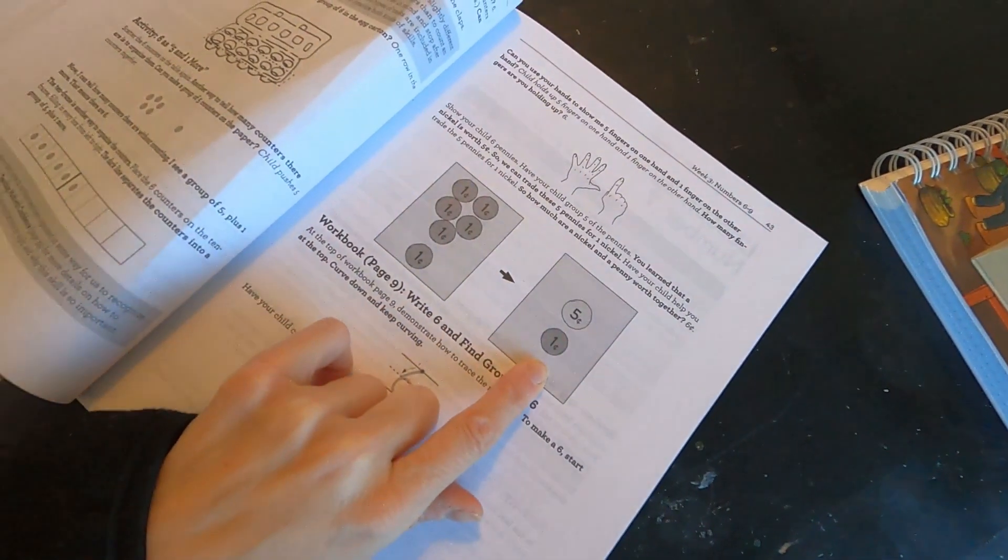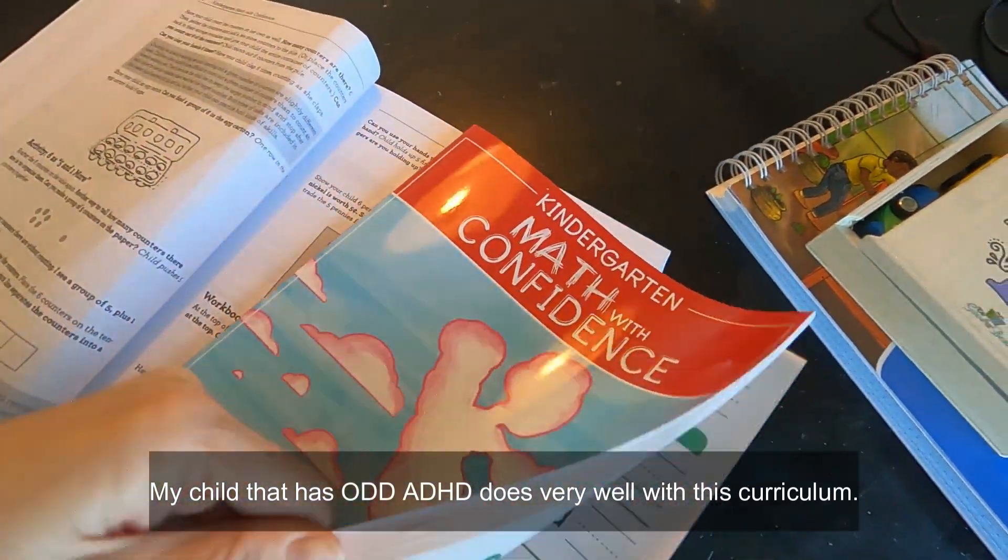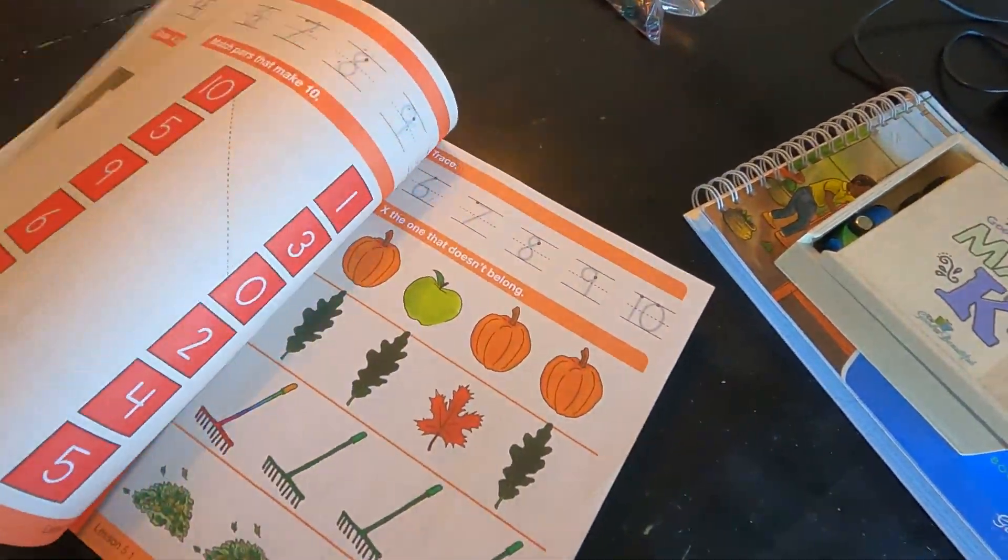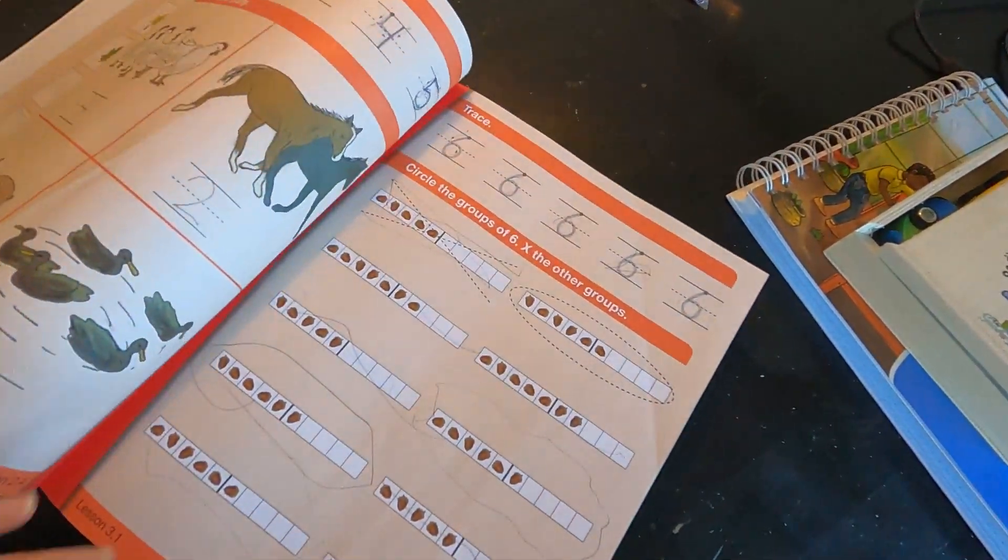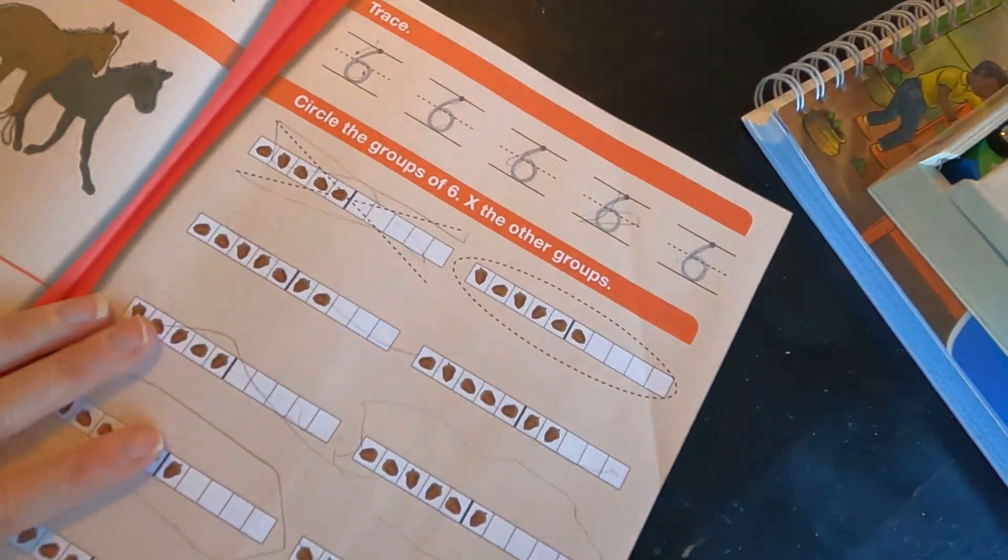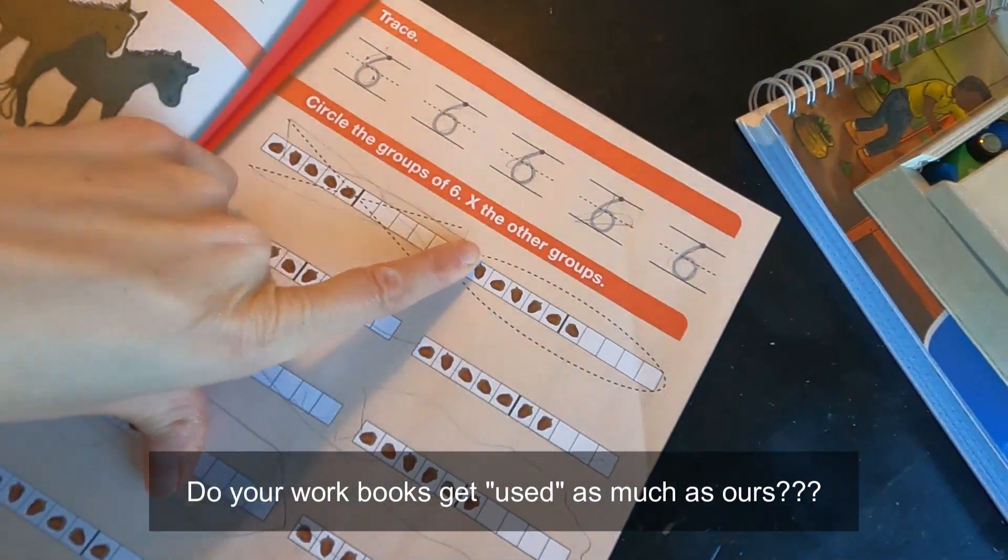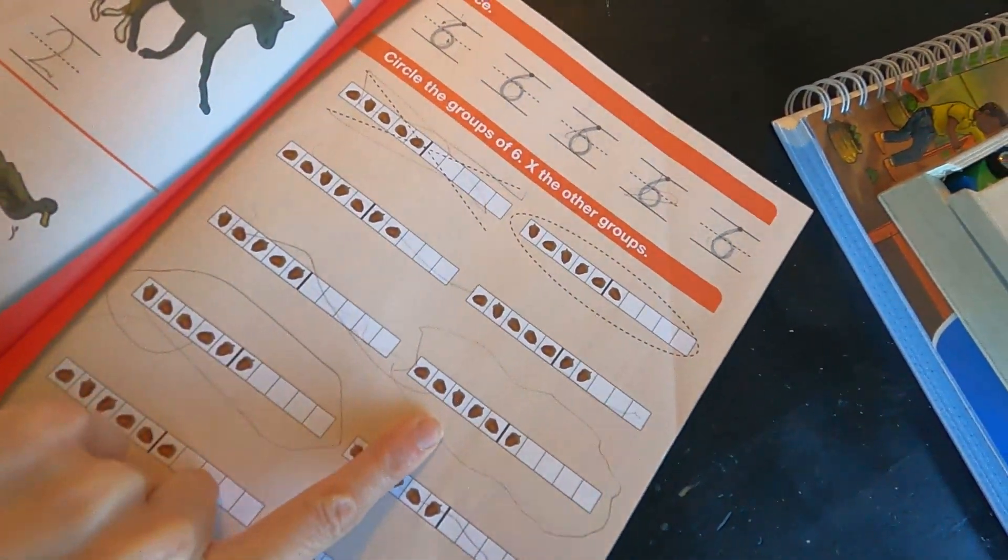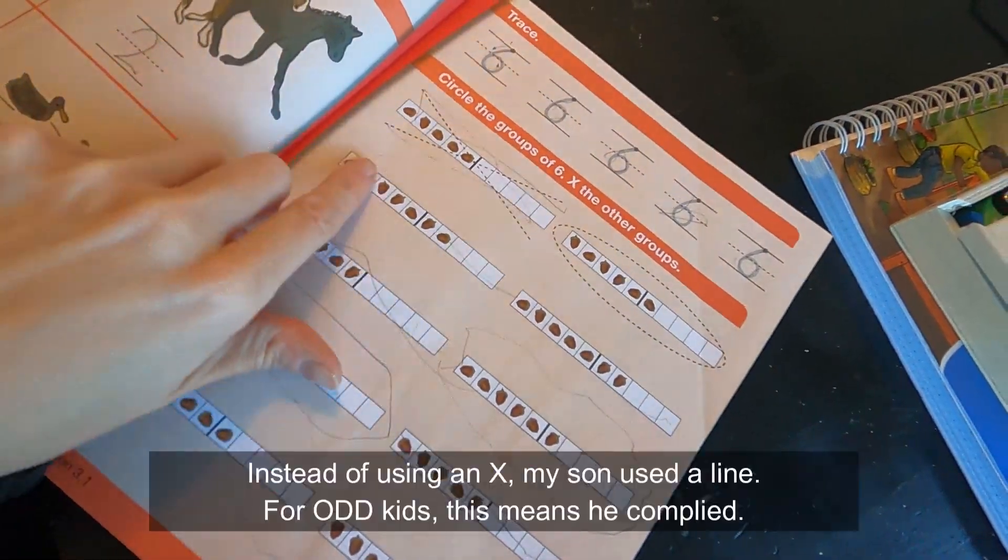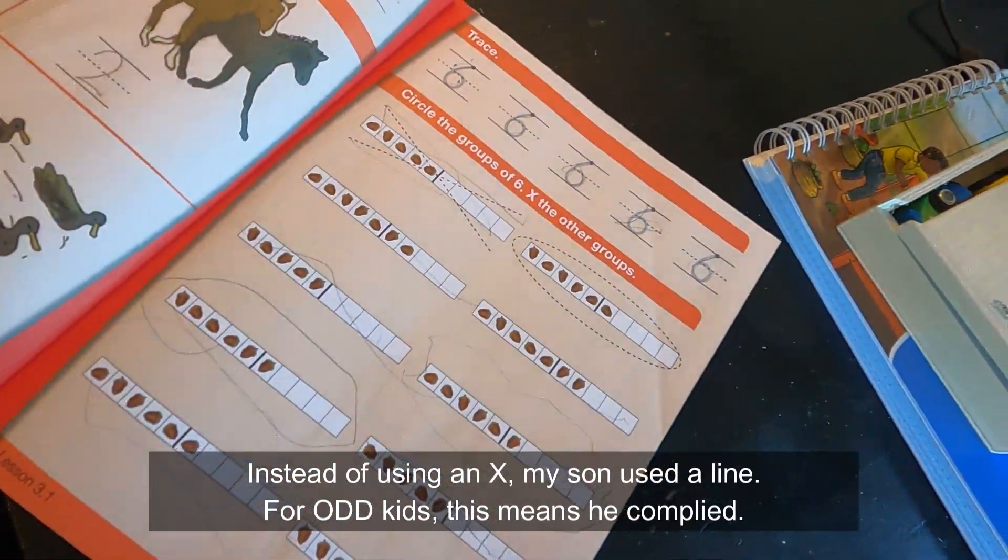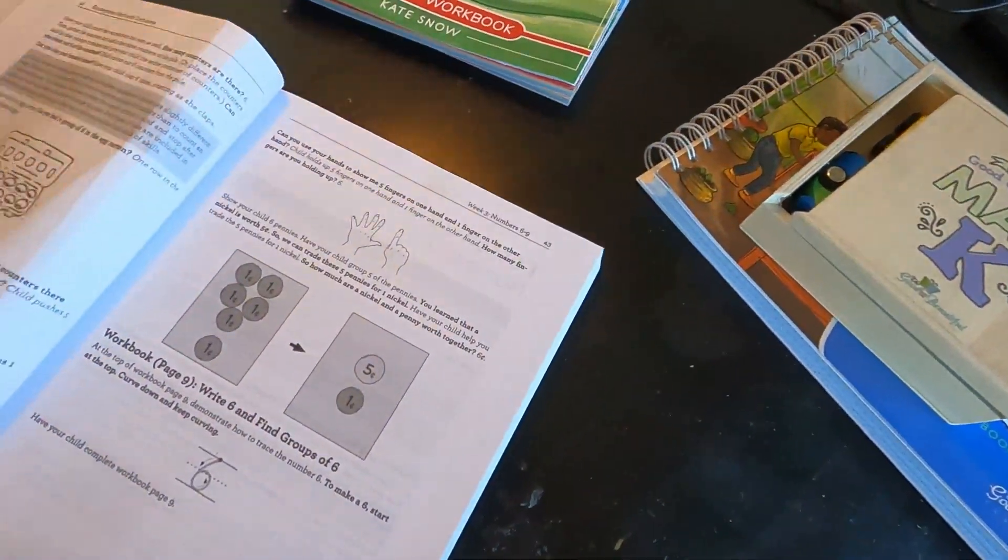Okay, so how much are a nickel and penny worth together? And then you do work page nine. Let's go in here. Our books get a little beat up as we use them - I don't know if anyone else's books are like these. So today you just do six, so it's one page. Circle the groups of six and x out the other groups. Circle the groups of six, x out the other groups. So here we just did a line through them - that's fine, I'm not gonna be that picky. Okay, so there you go. So now you've seen two lessons from that.